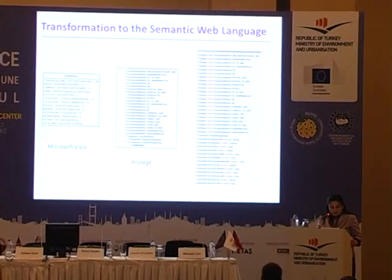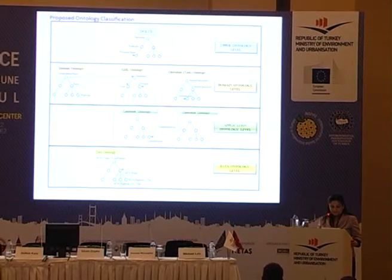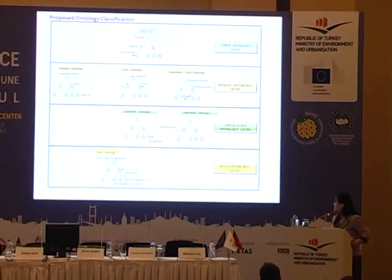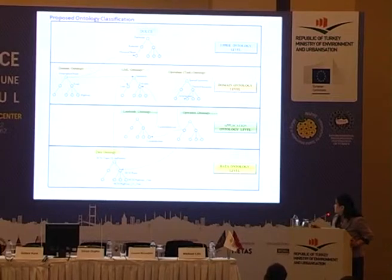Transformation to the semantic web language: the GCM road schema is converted to OWL. The proposed ontology classification is represented in figures. For example, the GCM road ontology is referenced at the domain ontology level, GML ontology, and the domain ontology is referenced to upper-level ontology.